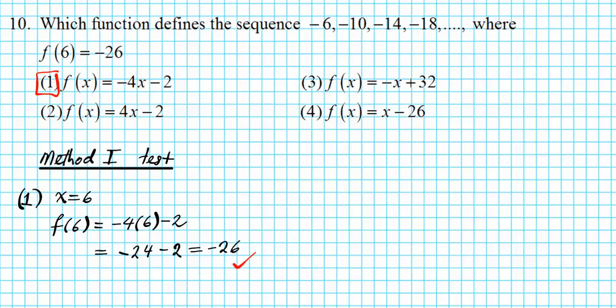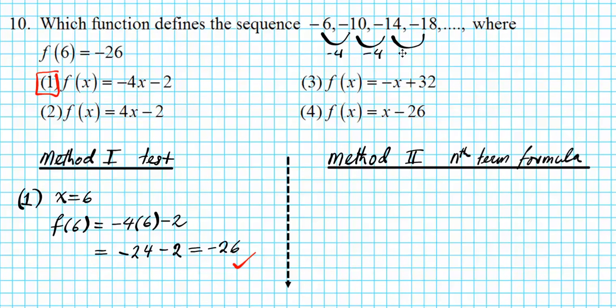Now let me show you another method. This is pretty nice. Method two involves using the formula for the nth term of an arithmetic sequence. Method two, nth term formula. Now you've got to be careful with this one because you have to make sure that the sequence that's provided is, in fact, an arithmetic sequence. And that is the case here because you have a common difference. From here to here, you minus four. From here to here, you minus four. So you're subtracting the same amount of number over and over again. That is an arithmetic sequence scenario.